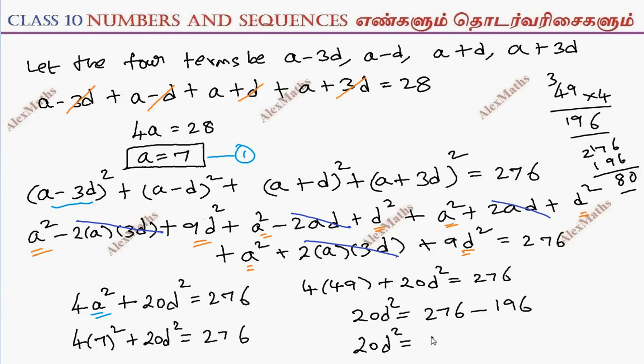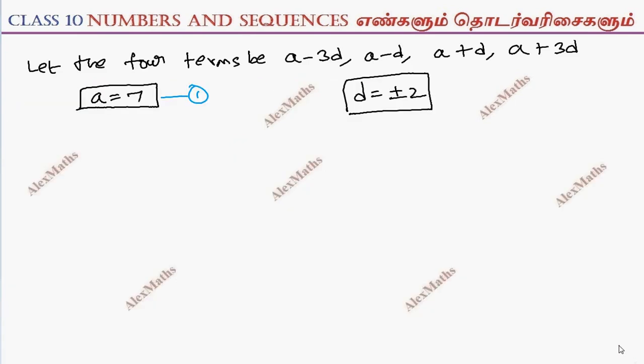d square equals 4, so d equals plus or minus 2. We have two values for a and d.